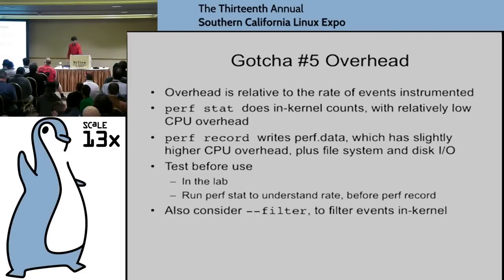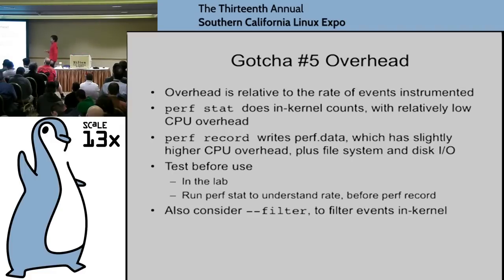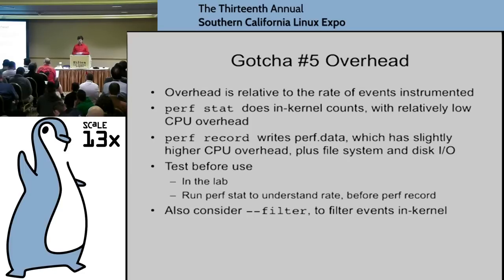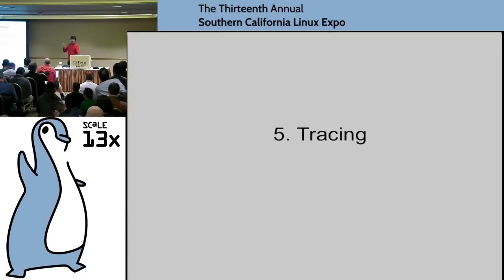The last gotcha is overhead — overhead is relative to the rate of events instrumented. That's why I start with perf stat to understand how frequent events are before doing perf record. You can also use filters to cut down events in-kernel before exporting to user level.